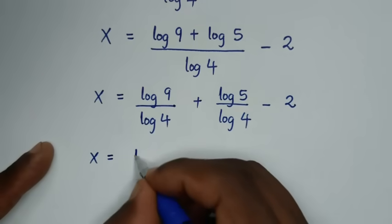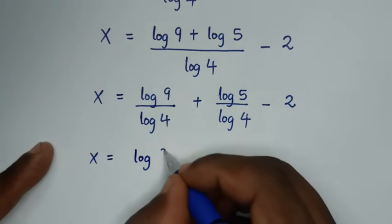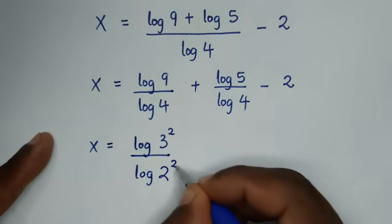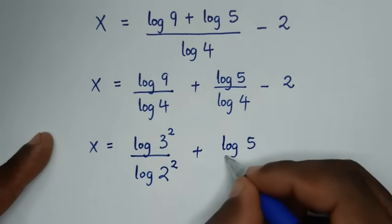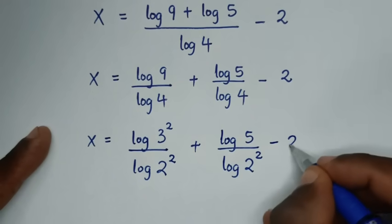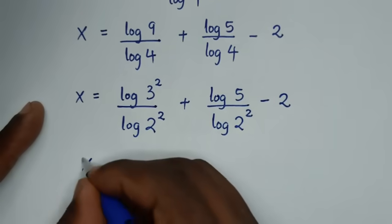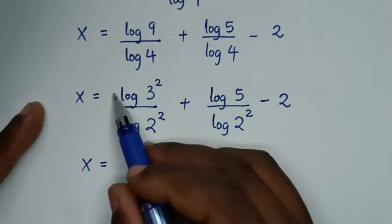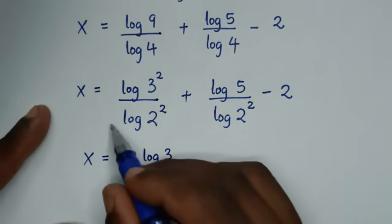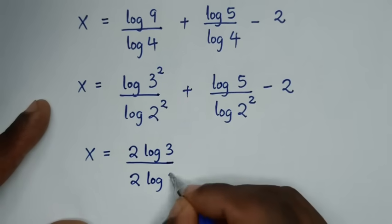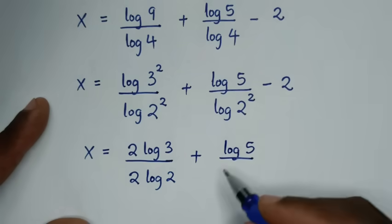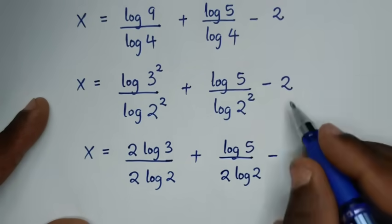Then x is equal to log of 9, where 9 is the same as 3 squared, over log of 4, where 4 is the same as 2 squared, plus log of 5 over log of 4, where 4 is 2 squared, minus 2. This power of 2 in 3 squared will move to the base to give 2 log of 3, and this power of 2 in 2 squared will move to the base to give 2 log of 2. Similarly for the second term: 2 log of 5 over 2 log of 2.